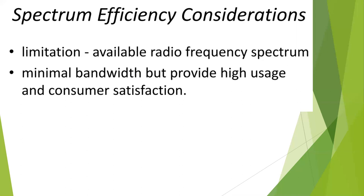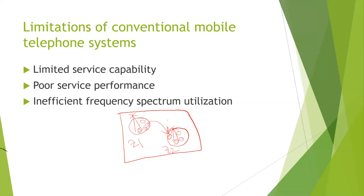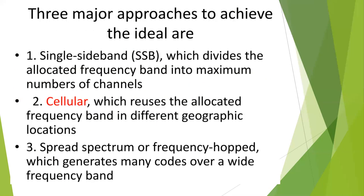So these are the main reasons — limited service capability, poor service performance, and inefficient frequency spectrum utilization — that drove the move to high-end cellular systems. The three major approaches are single sideband, cellular approach, and spread spectrum, with the cellular system's frequency reuse proving to be the most efficient model, confirmed in 1971. Thank you, I'll meet you in our next sessions.